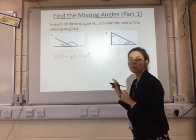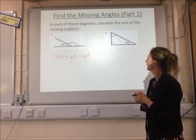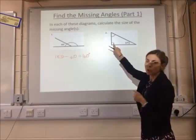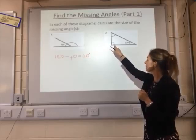On this one, you need to know that angles in a triangle add up to 180 degrees. We also need to know that that little square there stands for a right angle, and in a right angle we have 90 degrees.